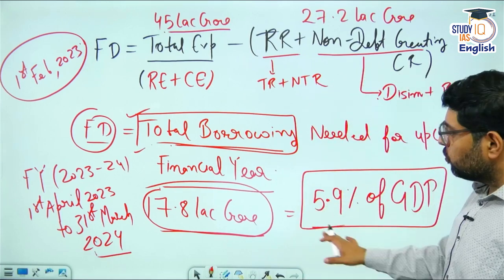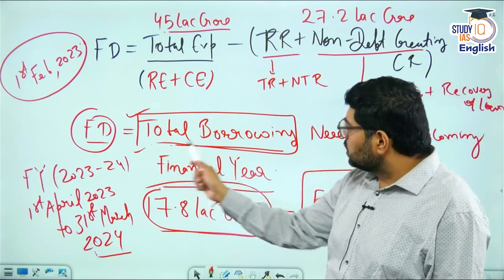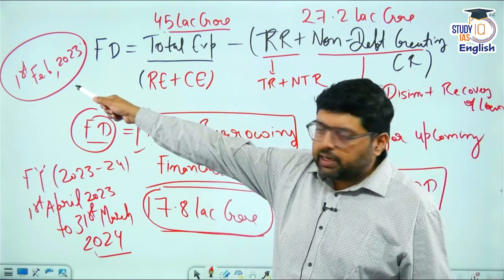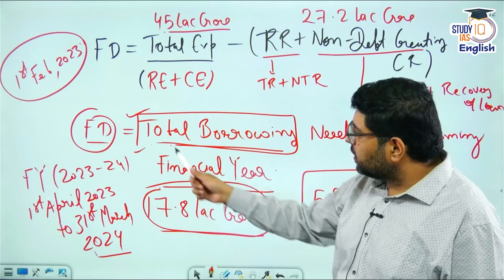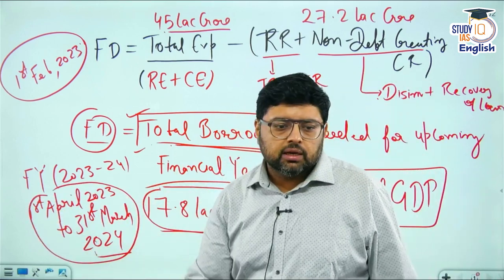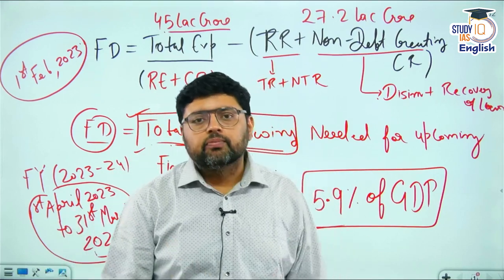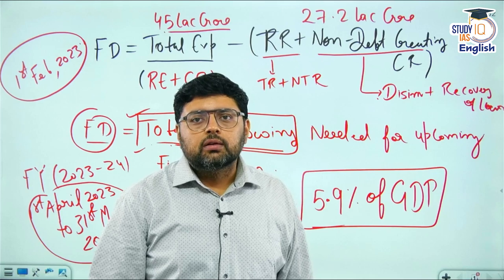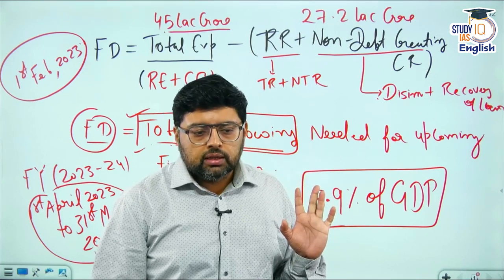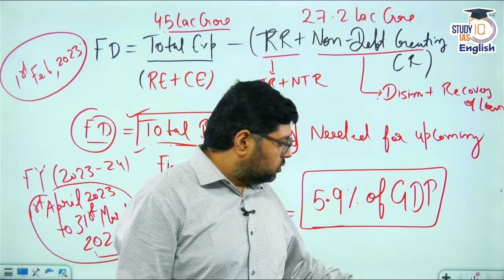This 17.8 lakh crores — 5.9% of GDP — is the amount of borrowing we are going to take in this financial year. That is why fiscal deficit is described as total borrowing needed for the upcoming financial year, since it is presented on 1st February for the upcoming financial year. The major concern now is how to reduce it further, and the government has taken many initiatives to do so.